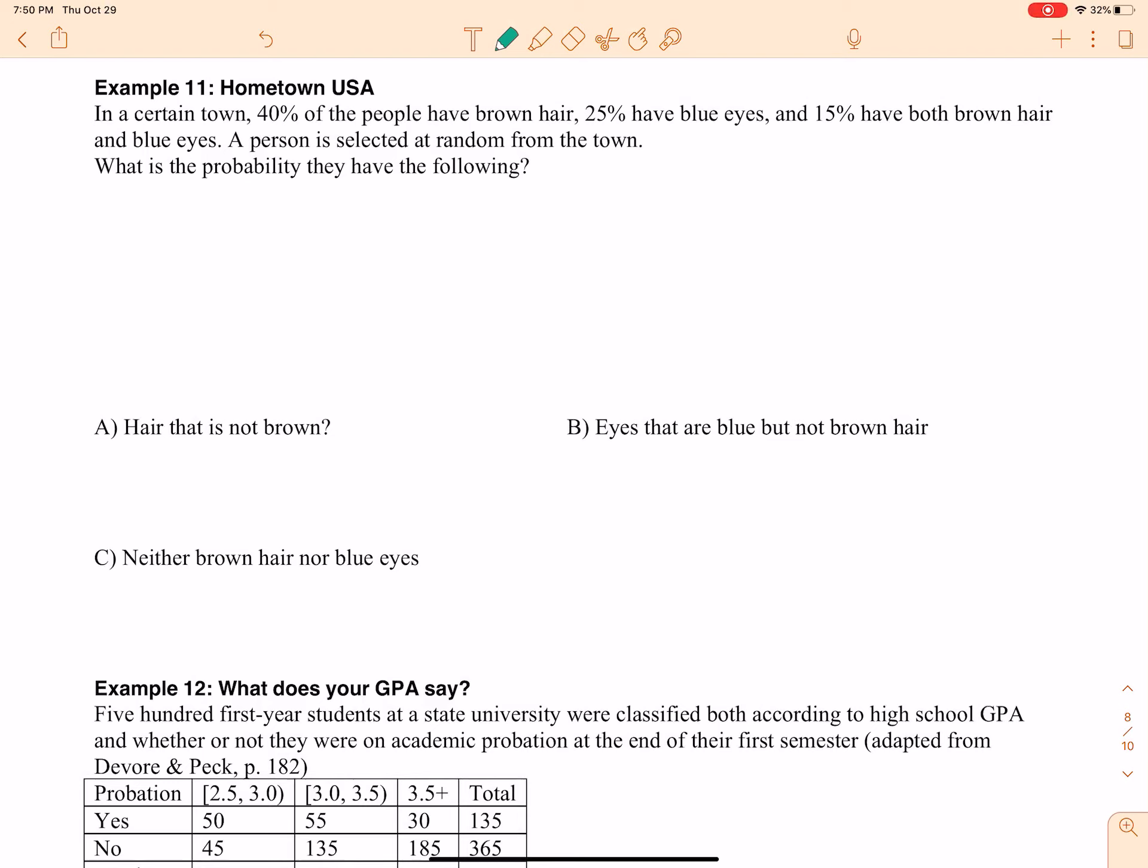Okay, here we go babies. We've got example 11, Hometown USA. In a certain town, 40% of people have brown hair, 25% have blue eyes, 15% have both brown hair and blue eyes. A person is selected at random from the town. What is the probability they have each of the following?